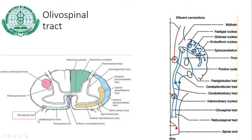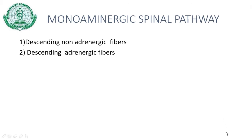The olivospinal tract lies between the lateral vestibulospinal and the anterior spinocerebellar tract. It extends from the inferior olivary nucleus and descends ipsilaterally to the anterior gray column. There is uncertainty about its origin and function. Moving on to the monoaminergic spinal pathways — these are descending noradrenergic and adrenergic fibers, poorly localized, descending with the corticospinal and reticulospinal tracts. They carry information from the hypothalamus and brainstem nuclei to the preganglionic autonomic neurons of the spinal cord.